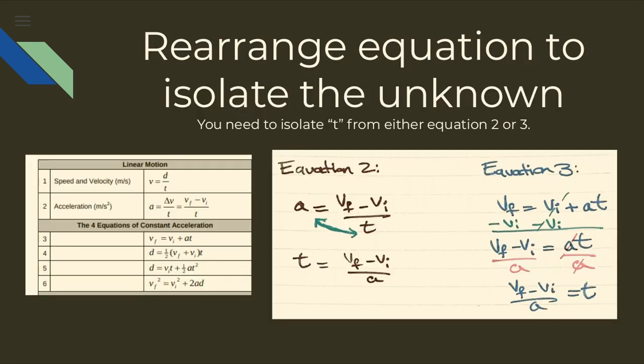It doesn't matter if you use equation 2 or 3 as long as you isolate for T correctly. Here I've shown the proper steps for either equation, and the end result is T is equal to VF minus VI over A, or basically time is equal to final velocity minus initial velocity divided by acceleration.